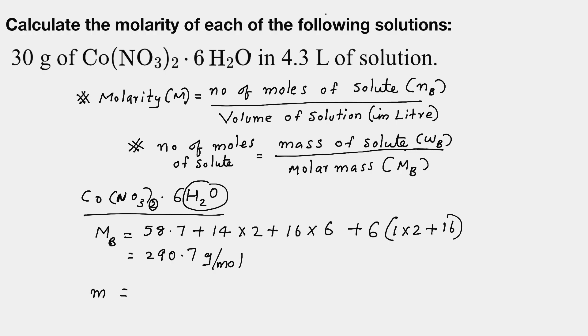From mass and molar mass, you can find the number of moles. What is number of moles? Number of moles equals mass divided by molar mass, which is 30 divided by 290.7.